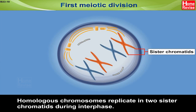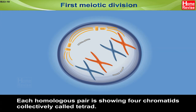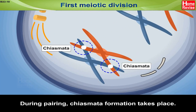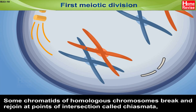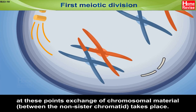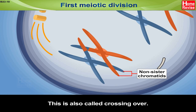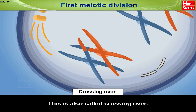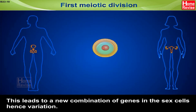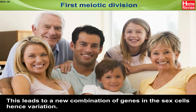First meiotic division: Homologous chromosomes replicate into two sister chromatids during interphase. Each homologous pair shows four chromatids, collectively called a tetrad. During pairing, chiasmata formation takes place. Some chromatids of homologous chromosomes break and rejoin at points of intersection called chiasmata. At these points, exchange of chromosomal material between non-sister chromatids takes place. This is also called crossing over, as seen in the figure. This leads to a new combination of genes in the sex cells, hence variation.